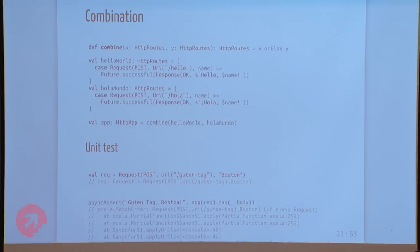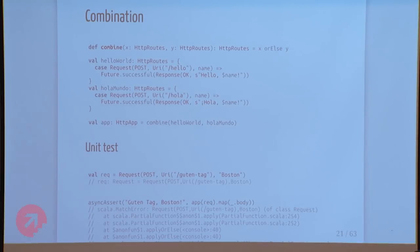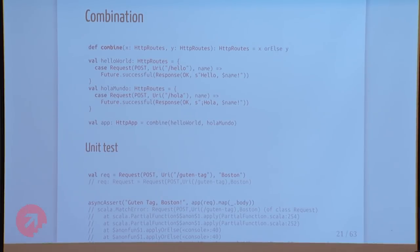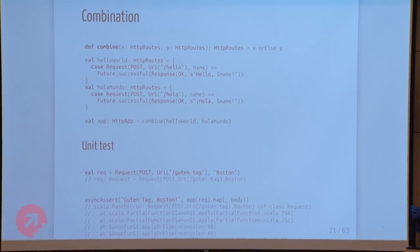This is still bad because a partial function in Scala ends up extending a total function. So HTTP routes is also an HTTP app — when part of the point of HTTP routes was that it is not an HTTP app. You need an explicit way to seal the service to make sure you're handling all of your cases. If you post to a language that isn't supported, you'd expect a 404, but instead you end up getting a crash.